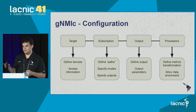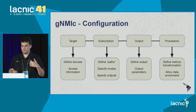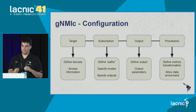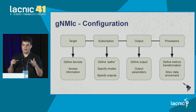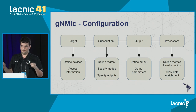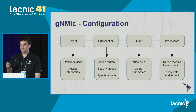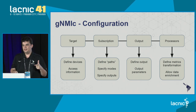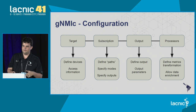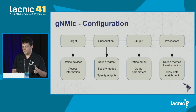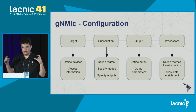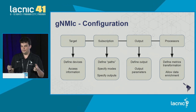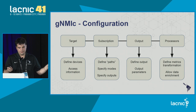Once the information has been specified, we need to define the subscriptions. This is the most interesting part of telemetry. When talking about data collection, we are talking about reading paths. Instead of SNMP where we have OIDs, in telemetry we have paths. These paths are documented by your vendor, and each path specifies what type of data to retrieve. I'll show this in more detail in the example.